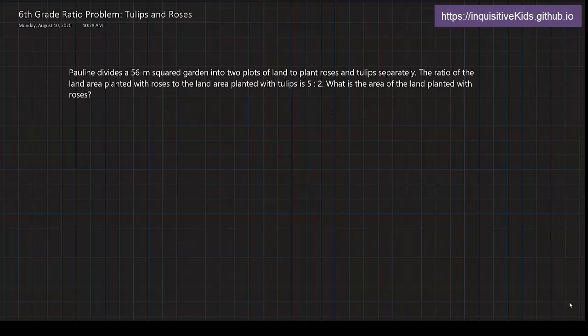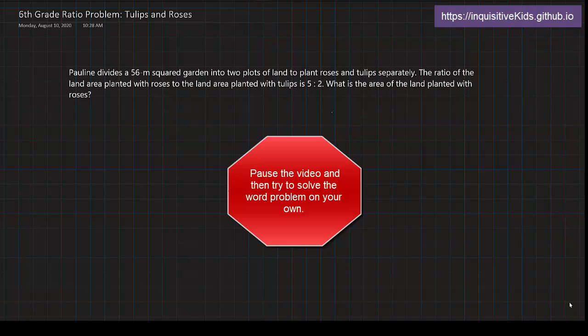Pauline divides a 56 meter squared garden into two plots of land to plant roses and tulips separately. The ratio of the land area planted with roses to the land area planted with tulips is 5 to 2. What is the area of the land planted with roses?